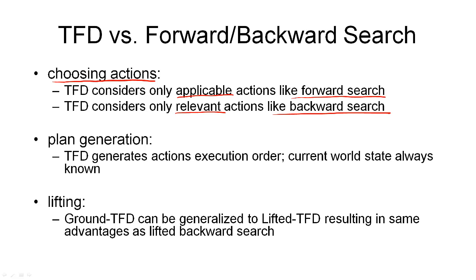Looking at plan generation, how the algorithm assembles its plan, the actions are added to the plan in the same order in which they will be executed later. That means the current world state is always known while we are planning. We're going forward through our state space, adding more actions, and we always know exactly what the current world state is like. This is a good thing because we know where we are and can apply good heuristics to get to the goal as quickly as possible.